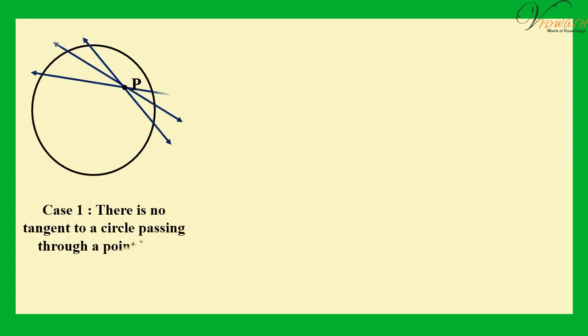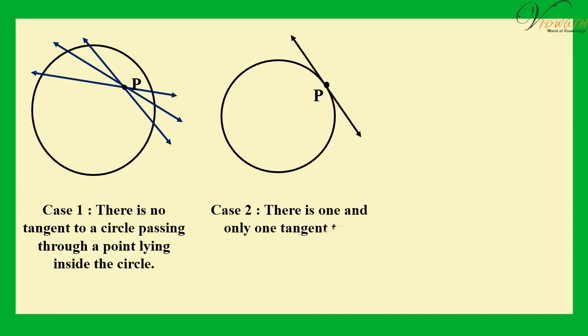We can summarize these facts as follows. Case 1: There is no tangent to a circle passing through a point lying inside the circle. Case 2: There is one and only one tangent to a circle passing through a point lying on the circle.